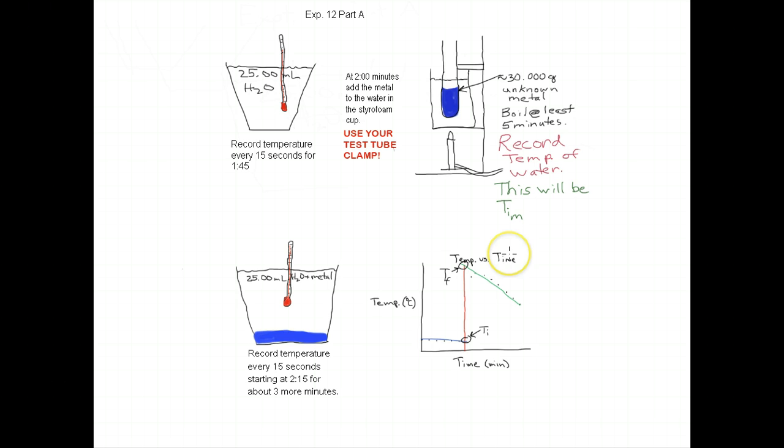When you get the metal from Brian, it'll be a large test tube. You take it and measure out about 30 grams into one of your large test tubes. It doesn't have to be exactly 30 grams, but make sure that you record three places past the decimal.